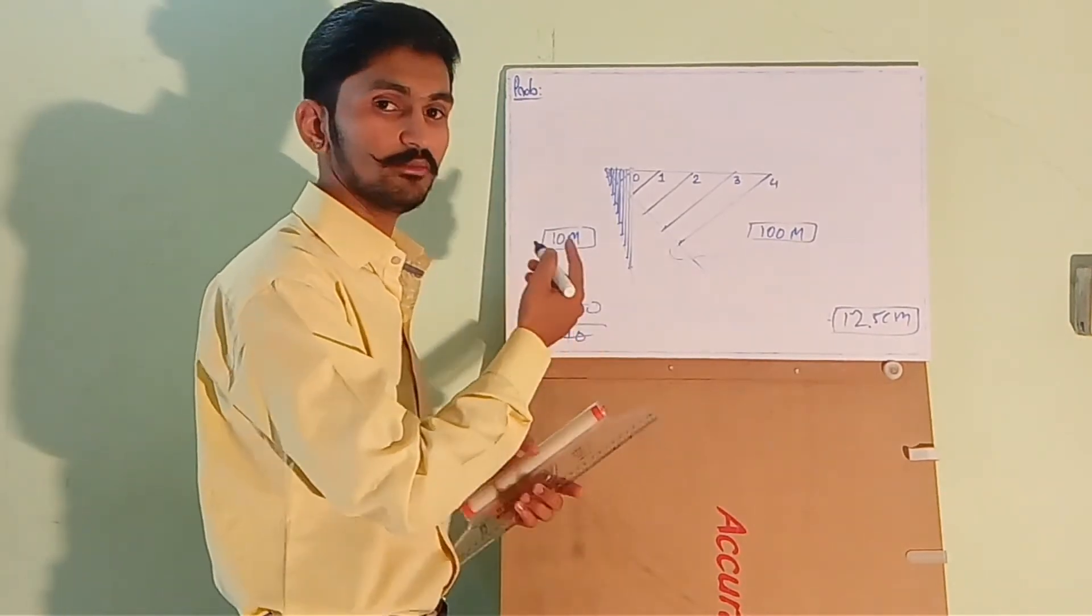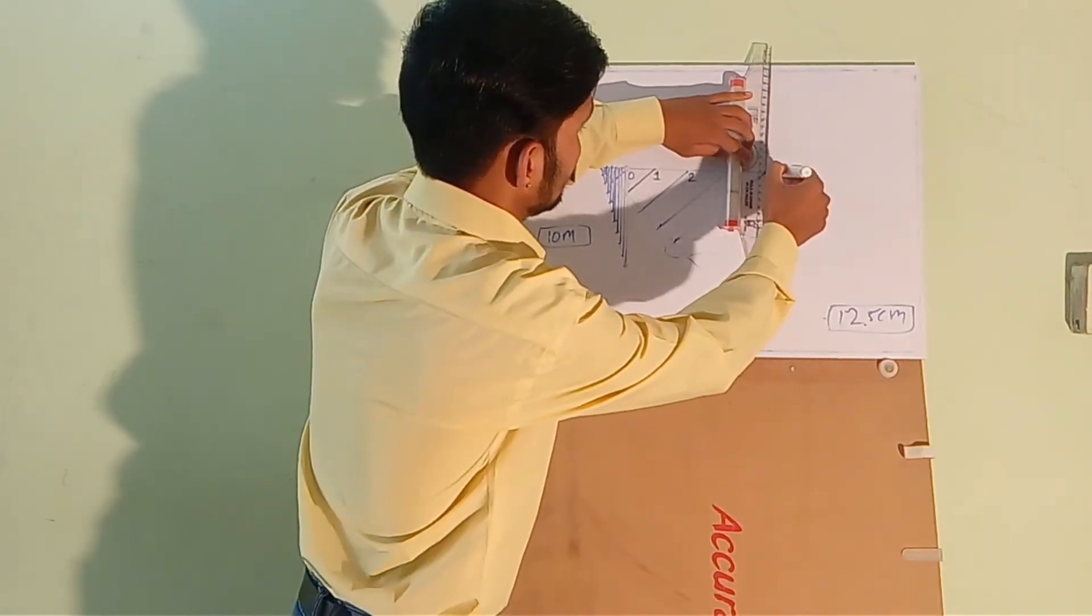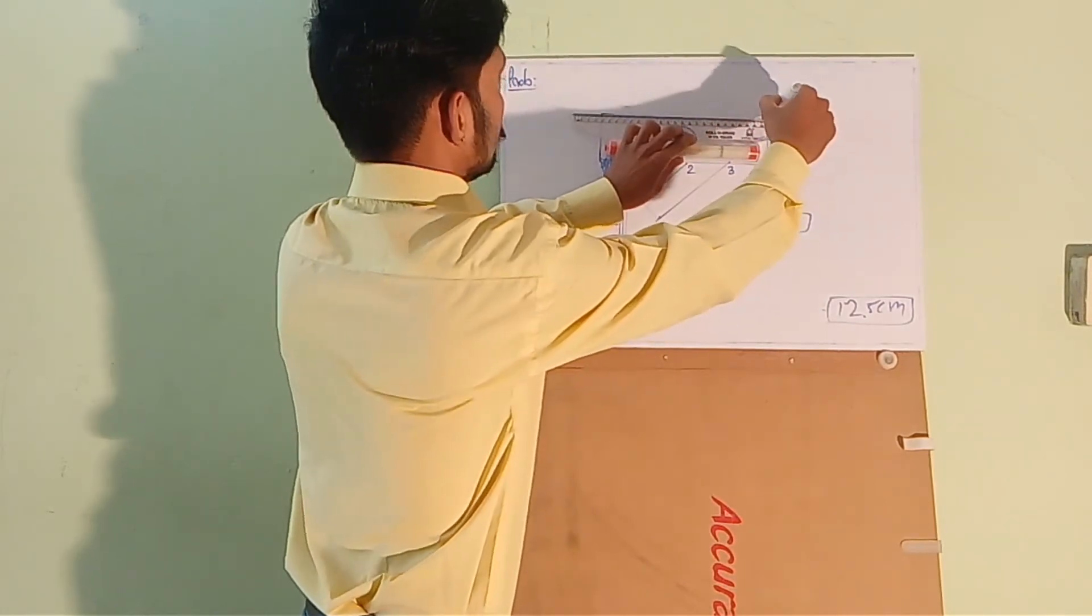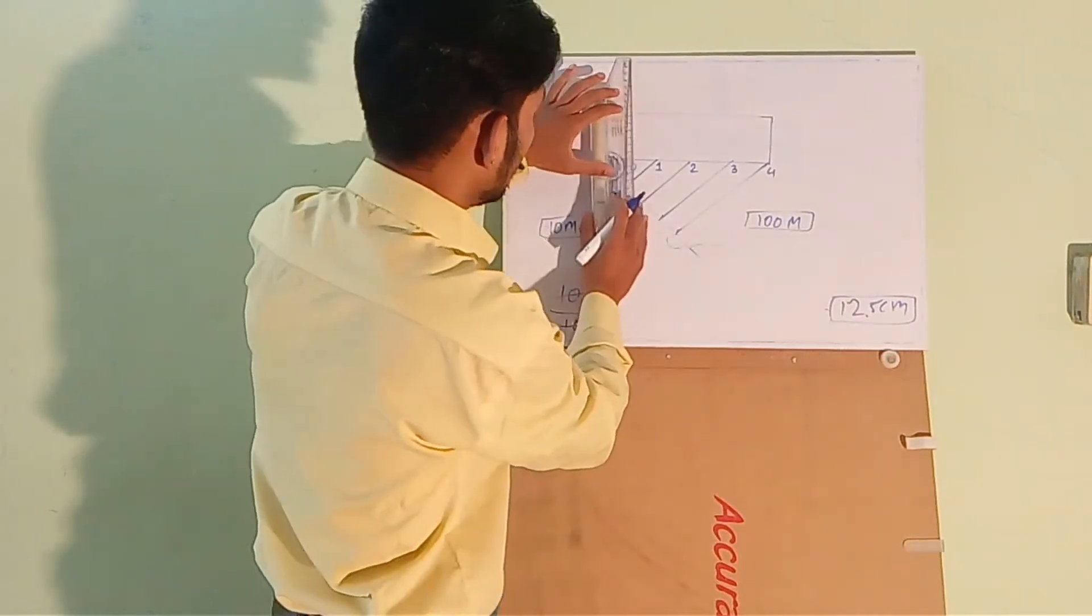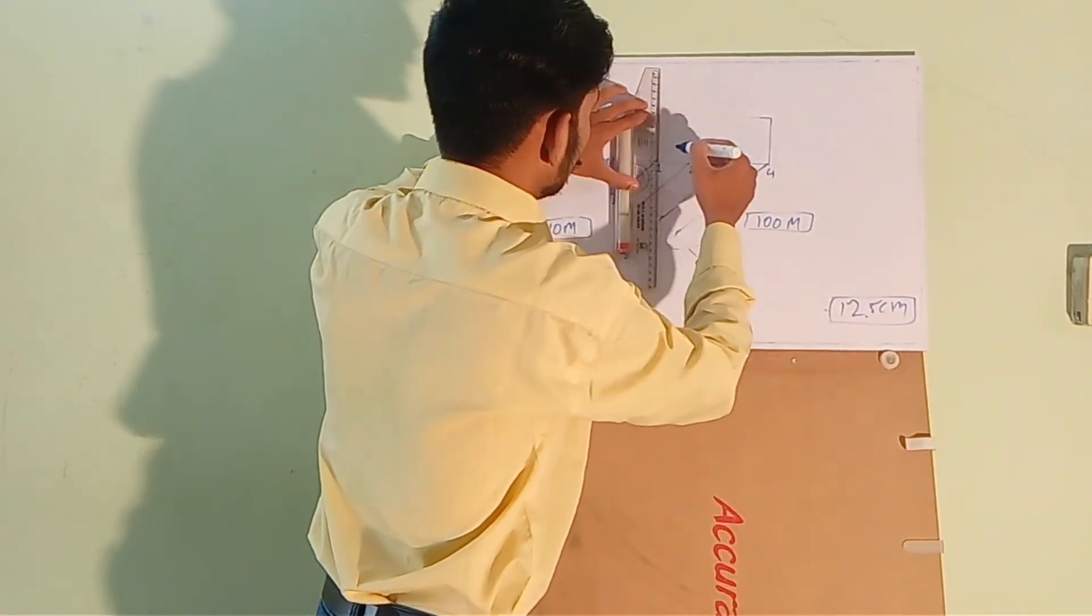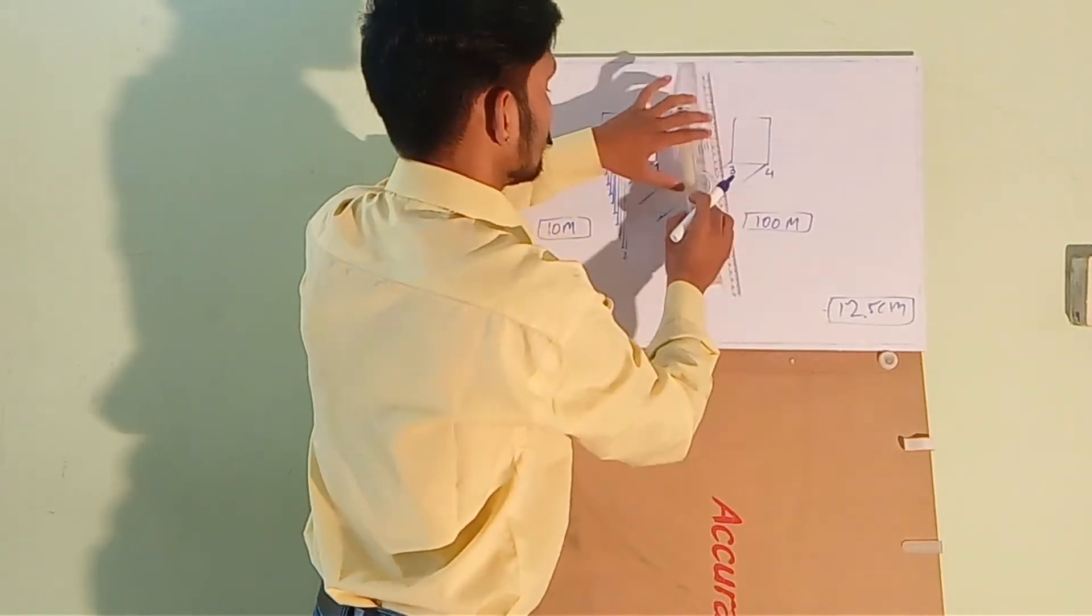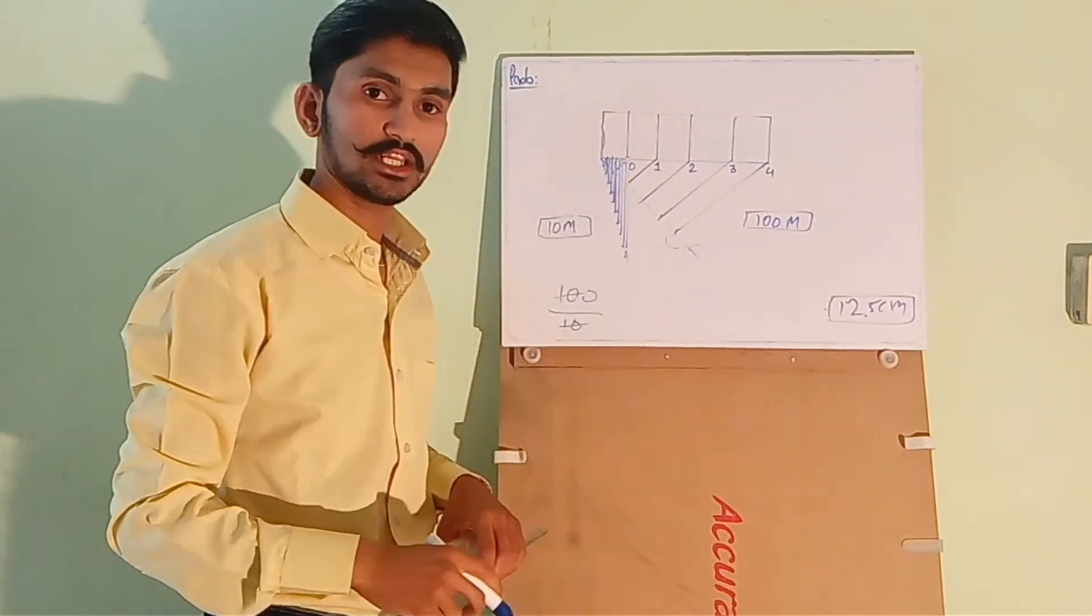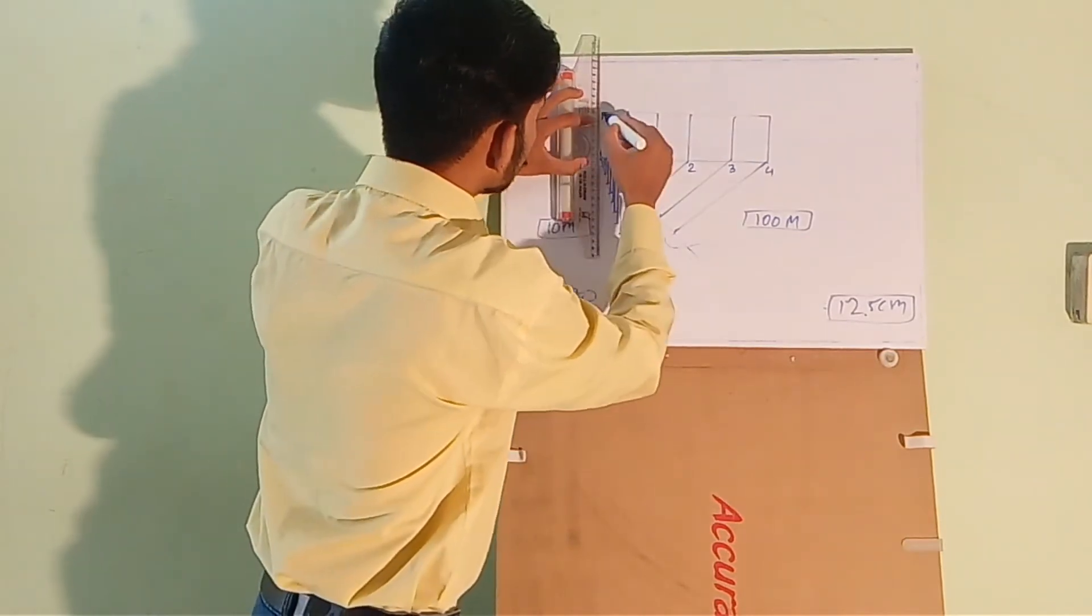Each division is showing 10 meters. Draw a vertical line of 5 centimeters here. And we will join them.